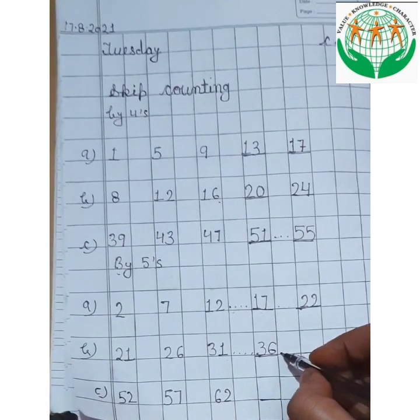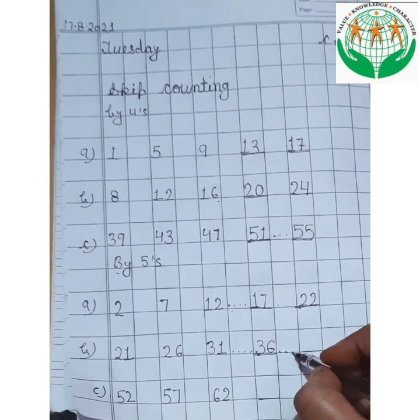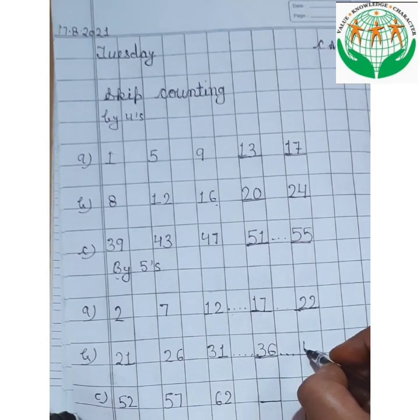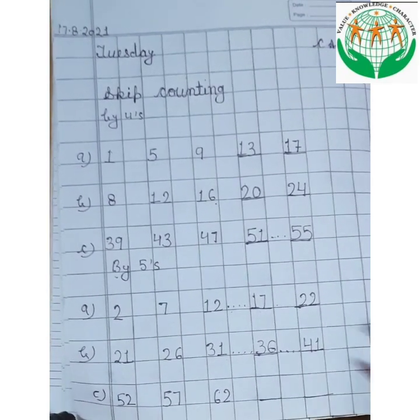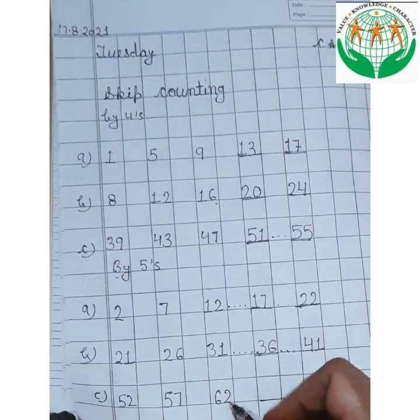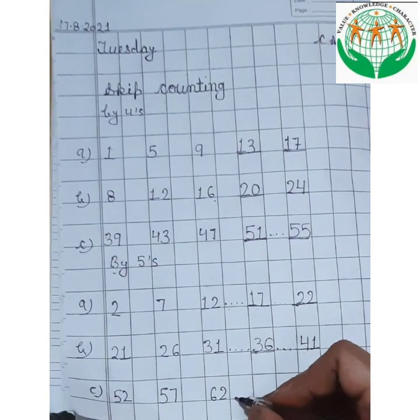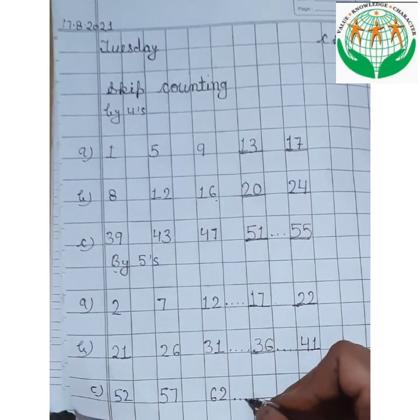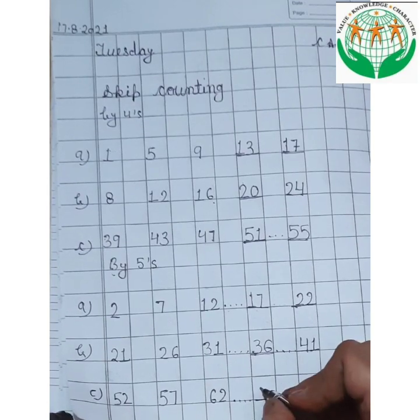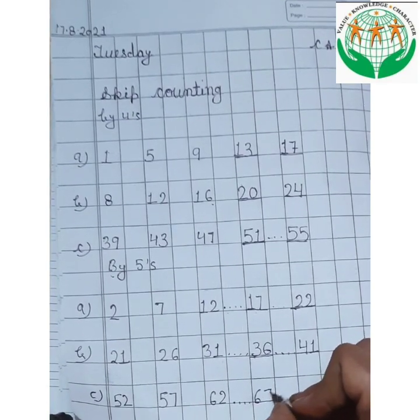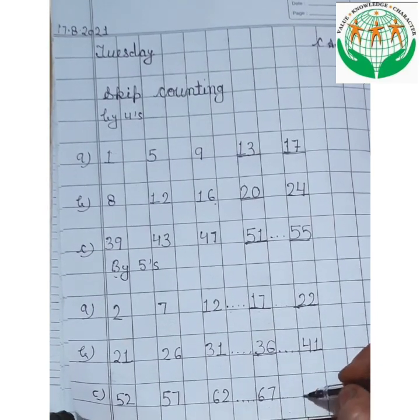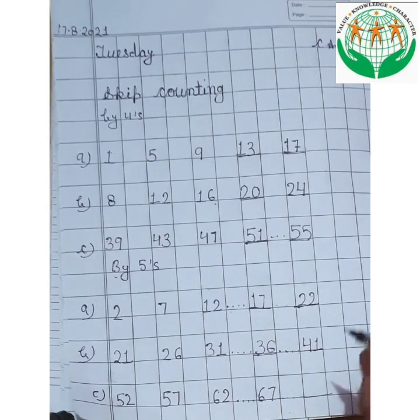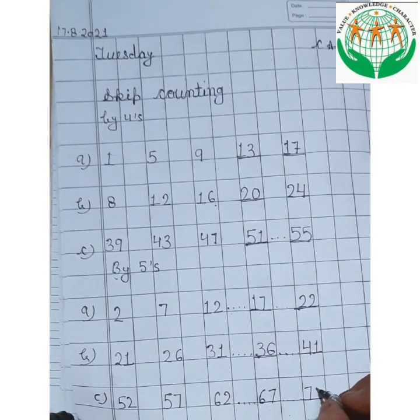Skip 37, 38, 39, 40 and write here 41. Now 62 — skip 63, 64, 65, 66 and write here 67. Skip 68, 69, 70, 71 and write here 72.